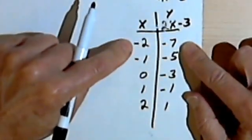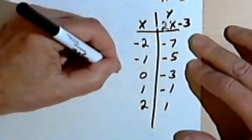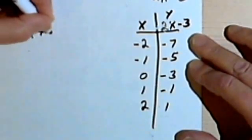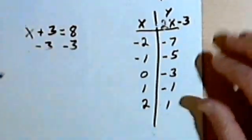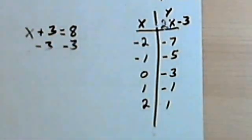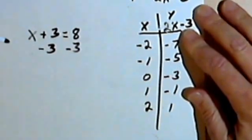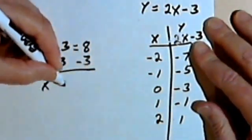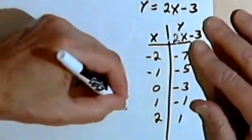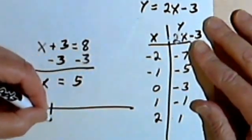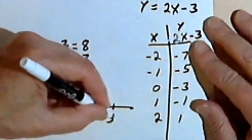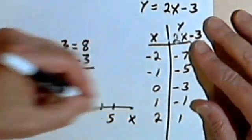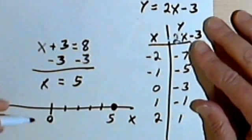Now the problem is that we're used to graphs that are just lines. In other words, if I had the problem x plus 3 equals 8, I'd subtract 3 from both sides, and I'd get x equals 5. And then I could just do a simple graph, a number line graph, 1, 2, 3, 4, 5. I could call this graph, this number line x, and say this point here is where x equals 5.